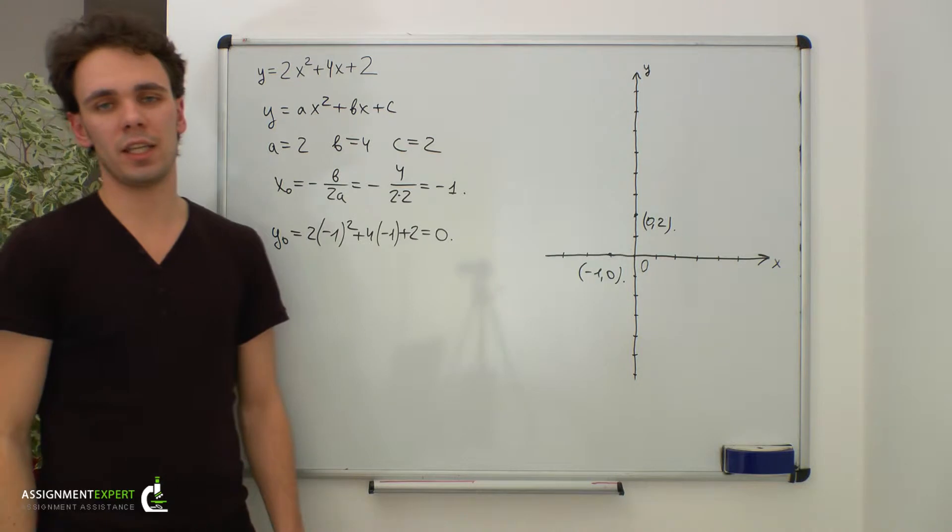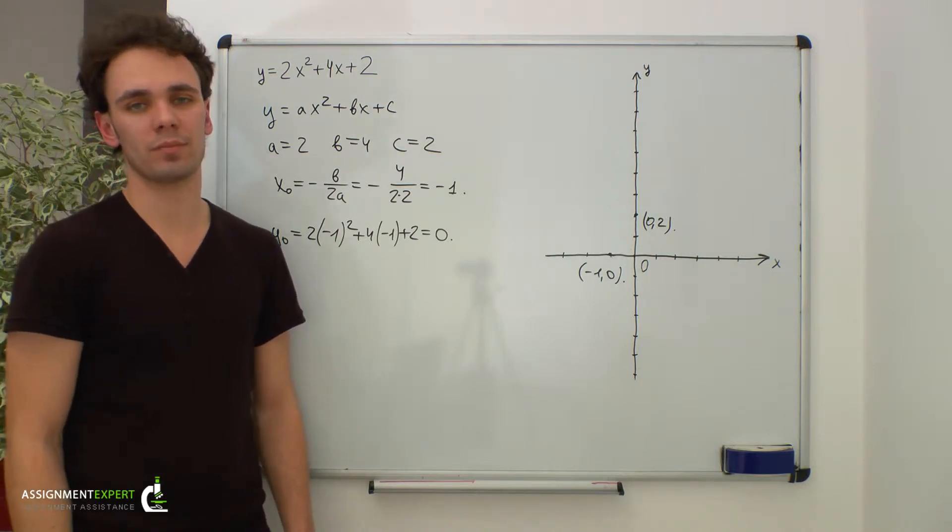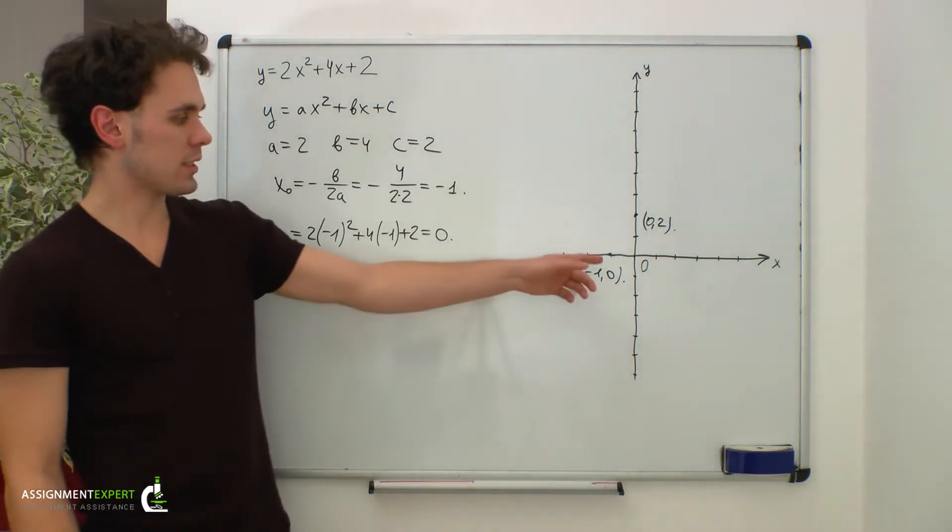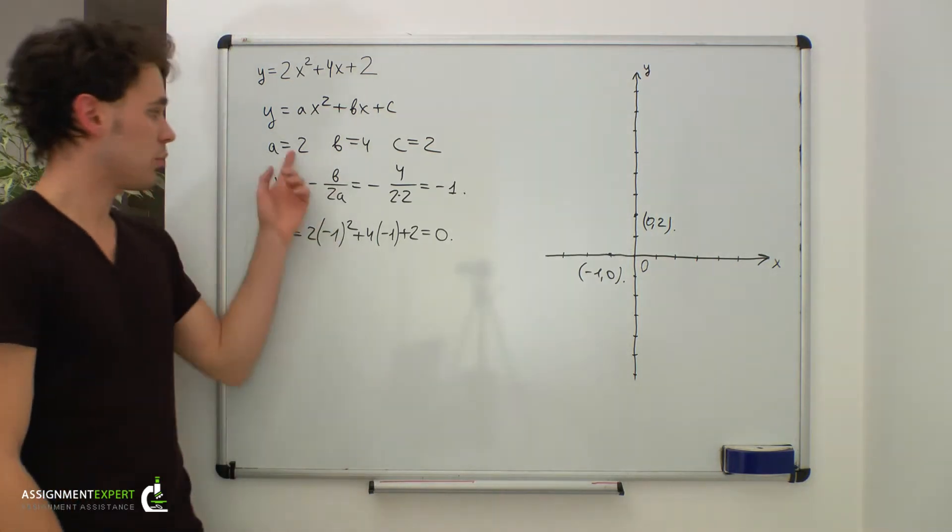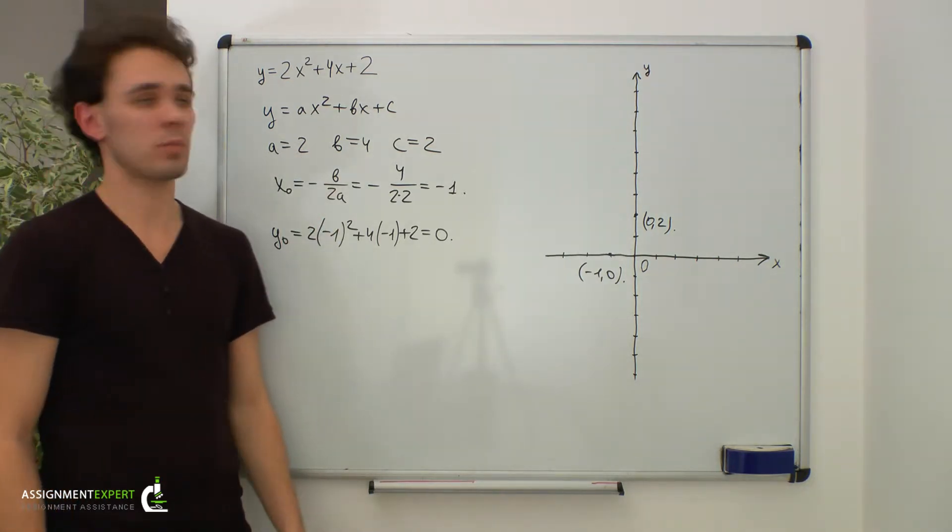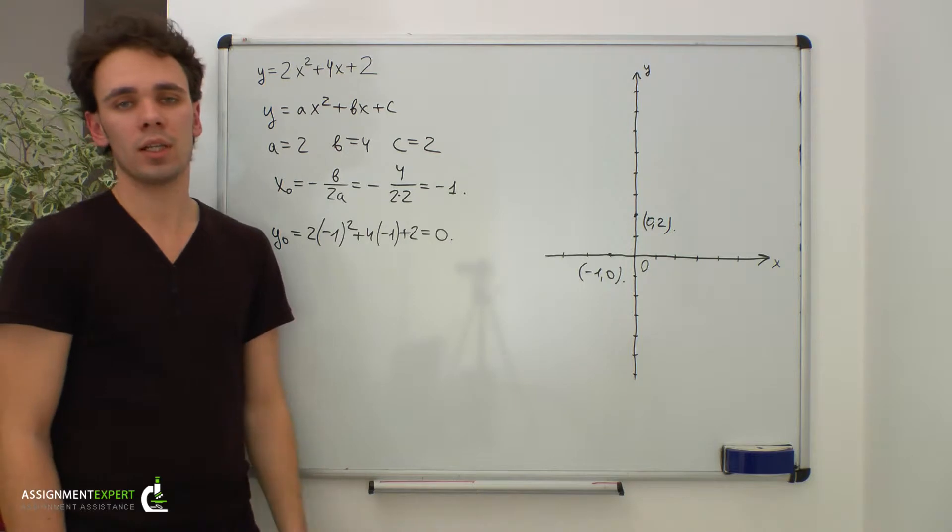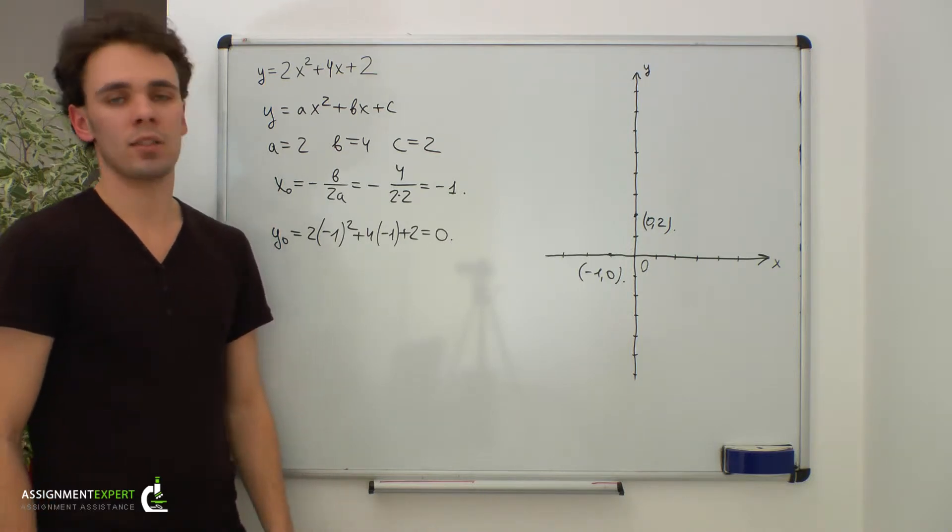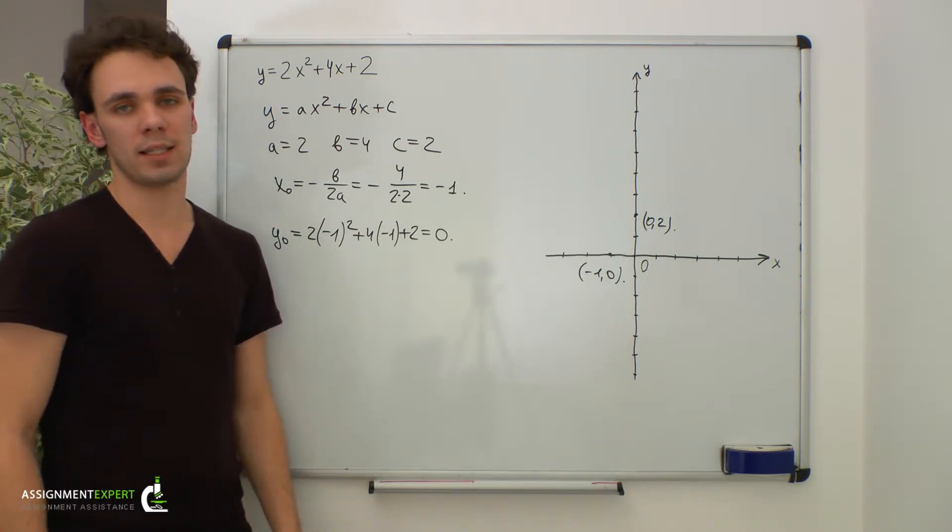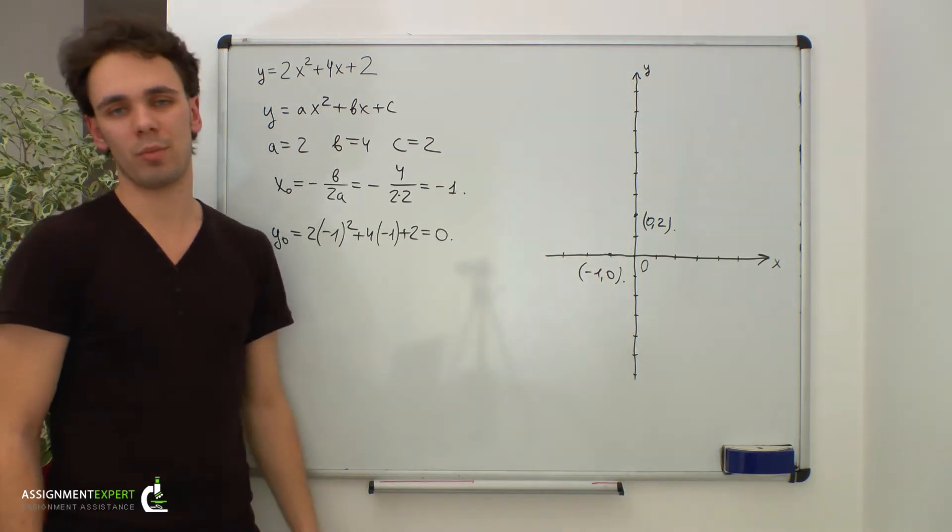Now we need to find the x-intercepts of our parabola. But we know that our vertex is lying at the x-axis and we know that the branches of our parabola go upwards because a is greater than 0. Now we can conclude that the whole parabola is above the x-axis except the vertex of the parabola. So there are no x-intercepts.